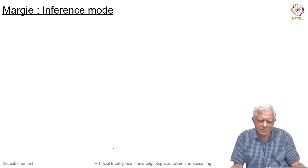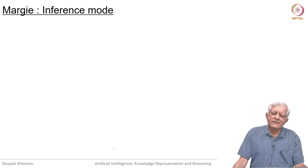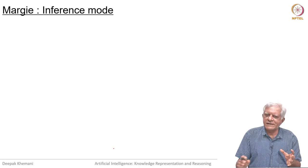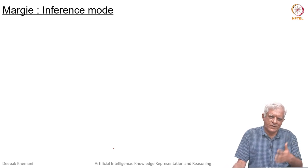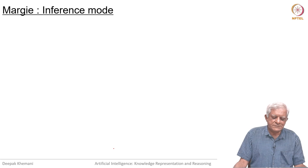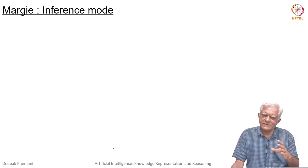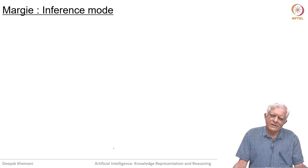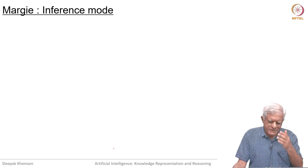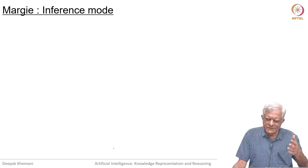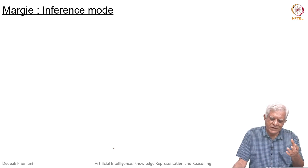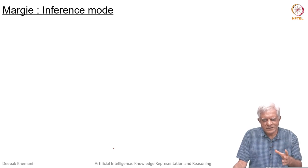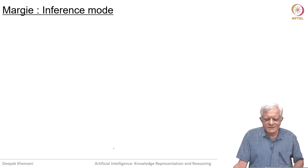We have been talking about conceptual dependency theory, which tries to represent everyday actions in terms of a small set of predicates. We will look at those actions in a short while, but before that let us look at how Marji, one of the earliest programs they wrote, could do inferences. What I will show you is, as reported in their literature, the inferences that the program actually makes — and you can try to imagine what kind of rules they must have put in. This whole thing was rule-based essentially.